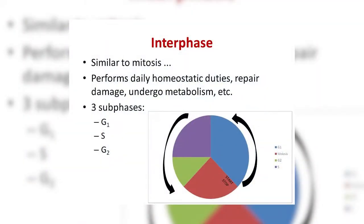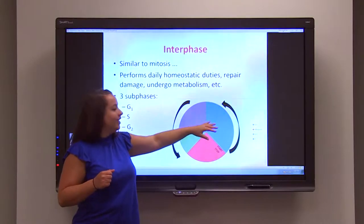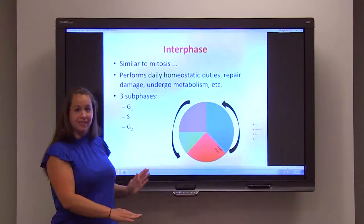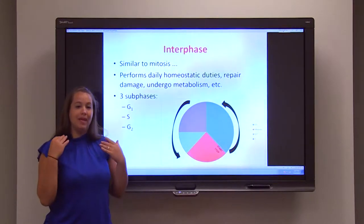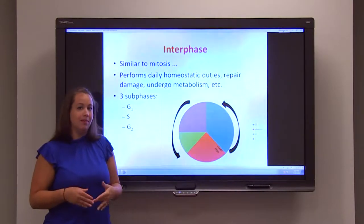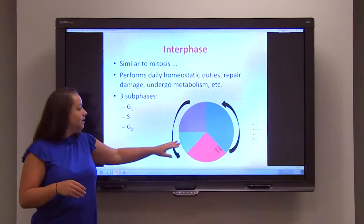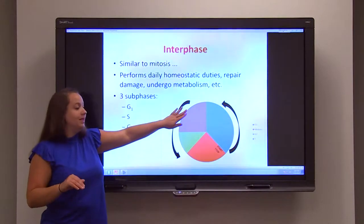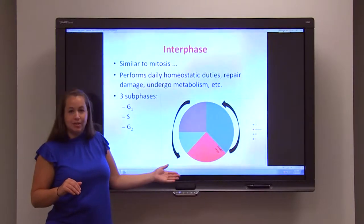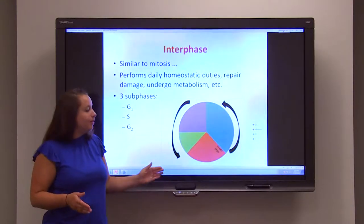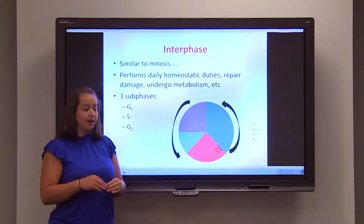Just like mitosis, meiosis is going to start with the process of interphase. During interphase, you have G1, which is where the cell grows; the S phase — S for synthesis of DNA — where the 2N cell replicates all of its genetic information and becomes a 4N cell with four copies; and then G2, the growth and development phase, preparing for division.